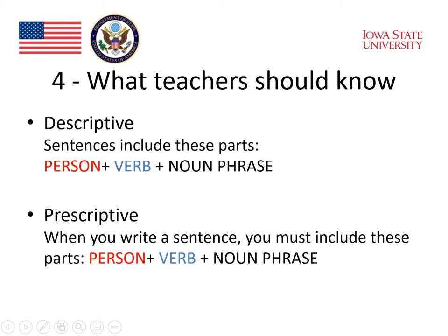Let's take a look at these important characteristics of grammar that teachers should know. One is the distinction between descriptive and prescriptive. A descriptive grammar tells us how sentences are made by real people as they use the language. It would have a description such as: sentences are made from these parts — a person, the verb, and then the noun phrase. That's a descriptive statement; it says how sentences are put together.